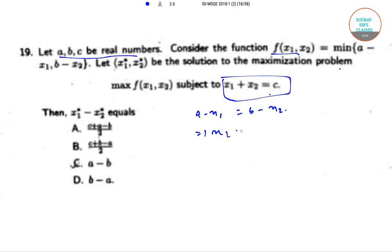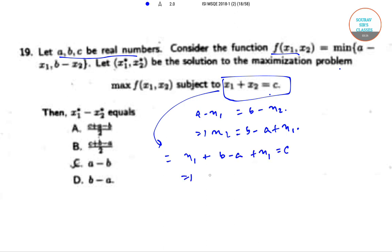Using the constraint x1 plus x2 equal to c, and substituting x2, we get x1 plus (b minus a plus x1) equal to c, or 2x1 equal to c plus a minus b. So x1* equals (c plus a minus b) divided by 2.